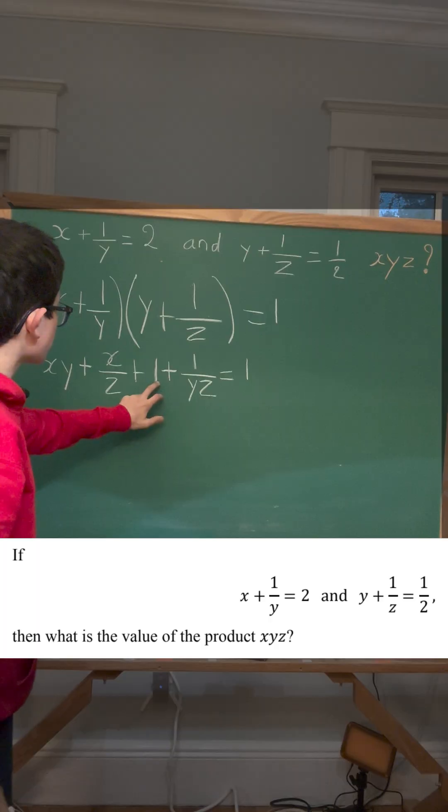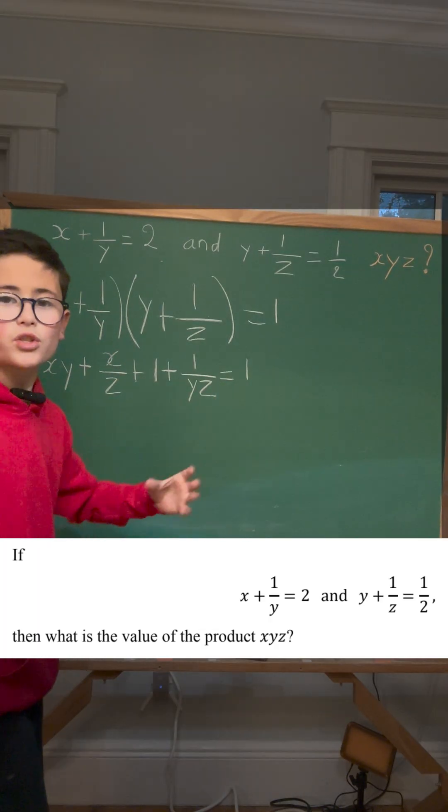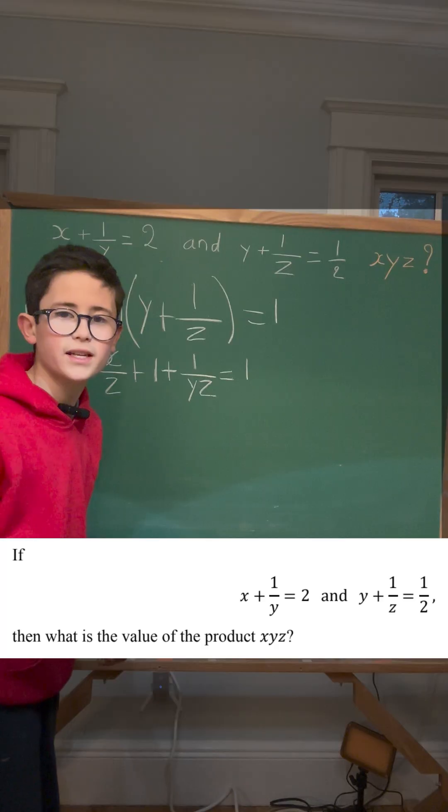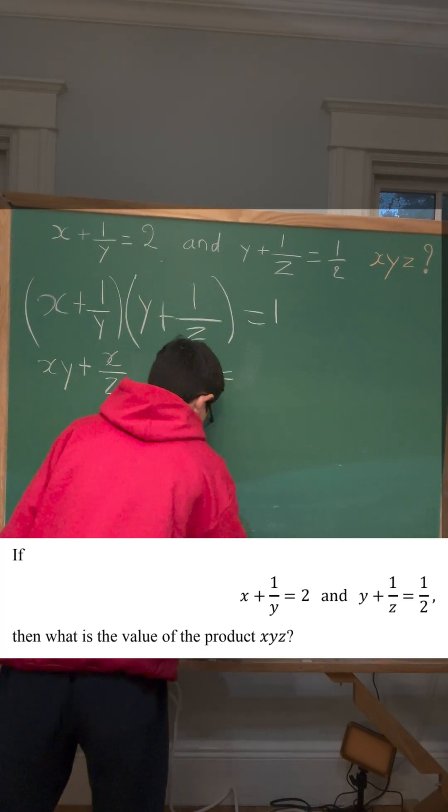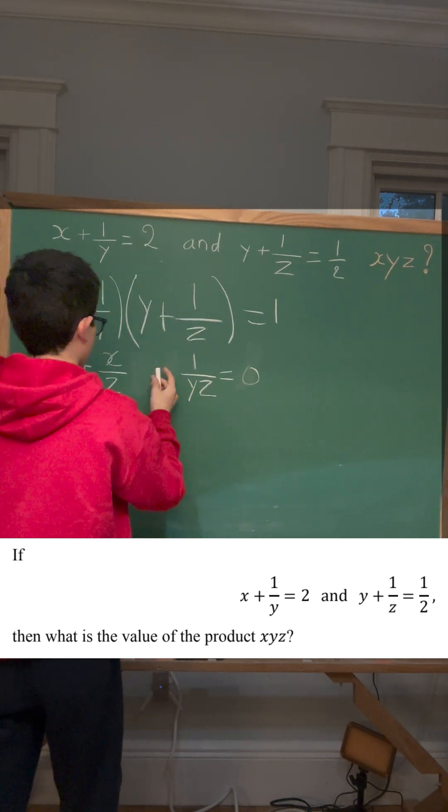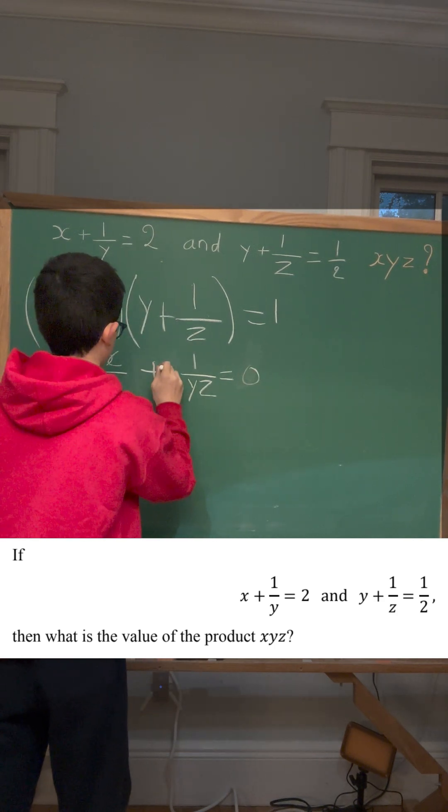We see that there's a 1 here and a 1 here, so those cancel out because we can do minus 1 to each side of this equation. This would be 0.